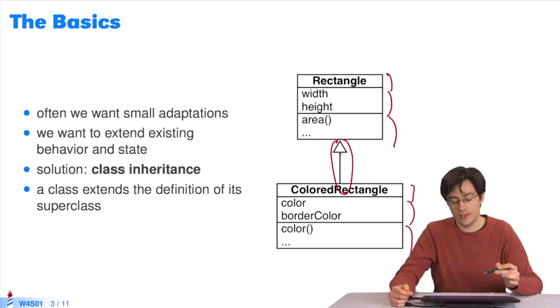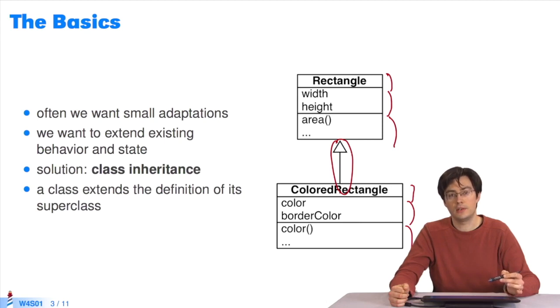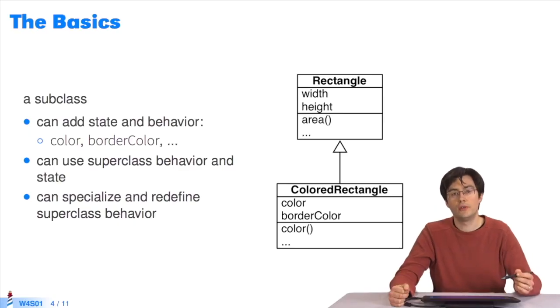The vertical arrow here, with its point represented as a blank triangle, indicates an inheritance relationship. The colored rectangle subclass inherits from the rectangle class. Generally, subclasses like colored rectangle refine the behavior and state of their superclass. A subclass like colored rectangle can add state and behavior to its superclass.